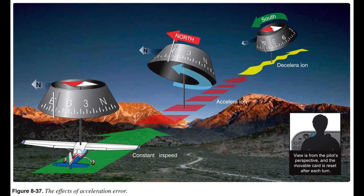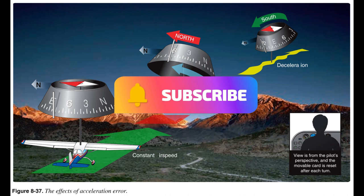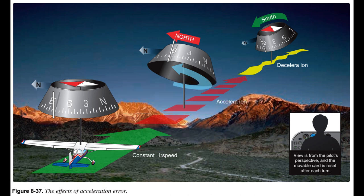Acceleration causes an indication toward north; deceleration causes an indication toward south. Oscillation is a combination of all of the errors previously mentioned and results in fluctuation of the compass card in relation to the actual heading direction of the aircraft. When setting the gyroscopic heading indicator to agree with the magnetic compass, use the average indication between the swings.